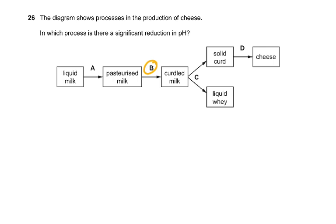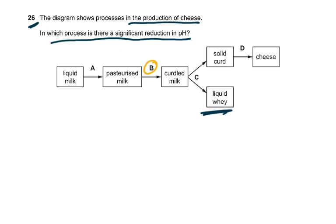Question 26: the diagram shows processes in the production of cheese. In which process is there a significant reduction in pH? Lactose is converted into an acid, and the acid converts the protein casein into a semi-solid state. The acid is produced when bacteria and enzymes are added to pasteurized milk, resulting in curdled milk. That is where the reduction in pH occurs.